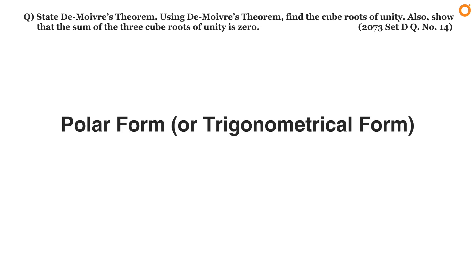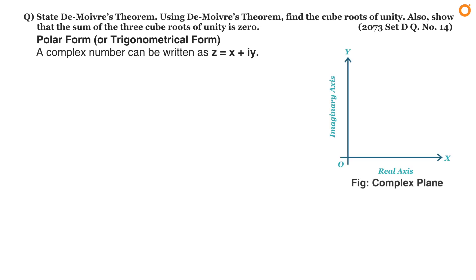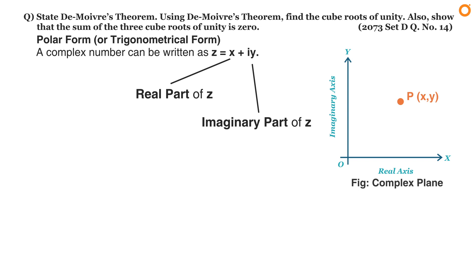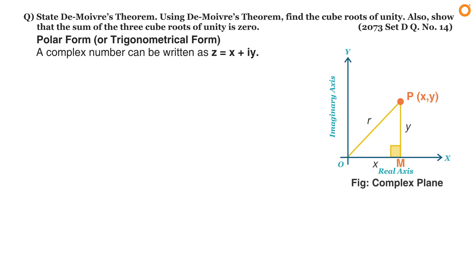Before solving this problem, let's learn the polar form or the trigonometrical form of a complex number. We know that a complex number can be written as z equals x plus iy, which can be represented by a point P(x, y) on a complex plane, where x and y are real numbers. x is called the real part of z and y is called the imaginary part of z. In the complex plane, the x-axis represents the real axis and the y-axis represents the imaginary axis. Draw a line PM perpendicular to x-axis OX and join OP. Let OP equal r and angle POX equal theta.